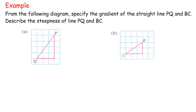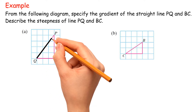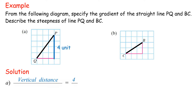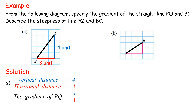Example: From the following diagram, specify the gradient of the straight line PQ in BC. Describe the steepness of line PQ in BC. Solution A: Vertical distance is 4 units. Horizontal distance is 3 units. The gradient of PQ equals 4 thirds.